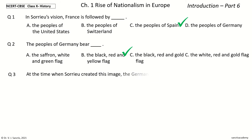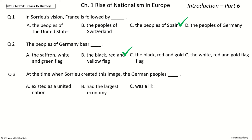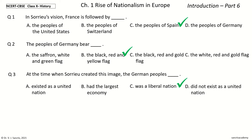Question 3: At the time when Sorrieu created this image, the German people's [blank]. The options are: existed as a United Nation, had the largest economy, was a liberal nation, did not exist as a United Nation. The answer is: the German peoples did not exist as a United Nation.